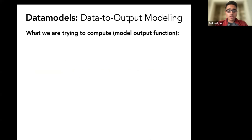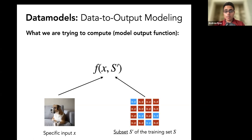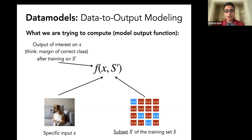Before I introduce what a data model is, I first want to introduce this really useful primitive that we call the model output function. The model output function is a function of two arguments. The first argument is a given specific test input x — for example, an image of a dog with the label dog. The second argument is a subset S' of some larger training set that we're interested in studying. So if we're studying ImageNet, then x is just some image from the ImageNet test set, and S' is any subset of the ImageNet training set. The output of this function is some quantity of interest measured from models — for example, the loss or the margin — evaluated on example x after training the model on S'.